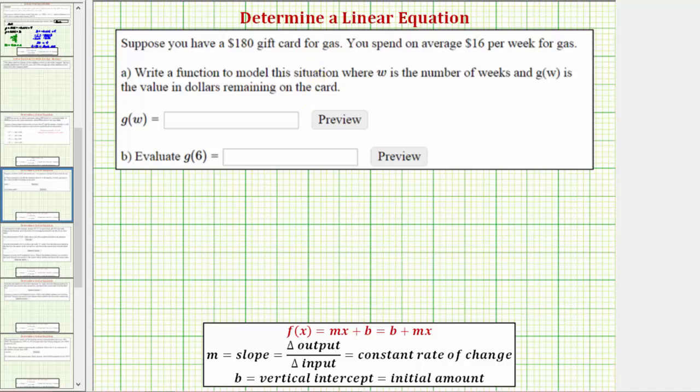More often, a linear function is in the form f(x) = mx + b, or f(x) = b + mx, where m is the slope, which is the constant rate of change, and b is the vertical intercept, but is also the initial or starting amount.